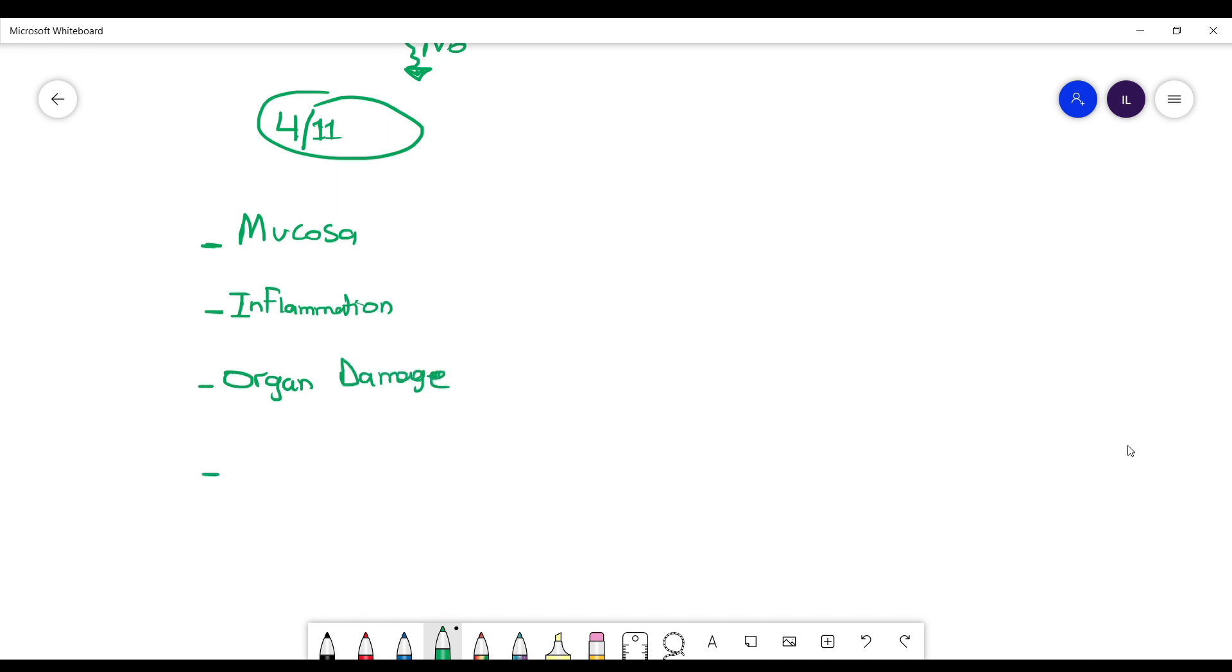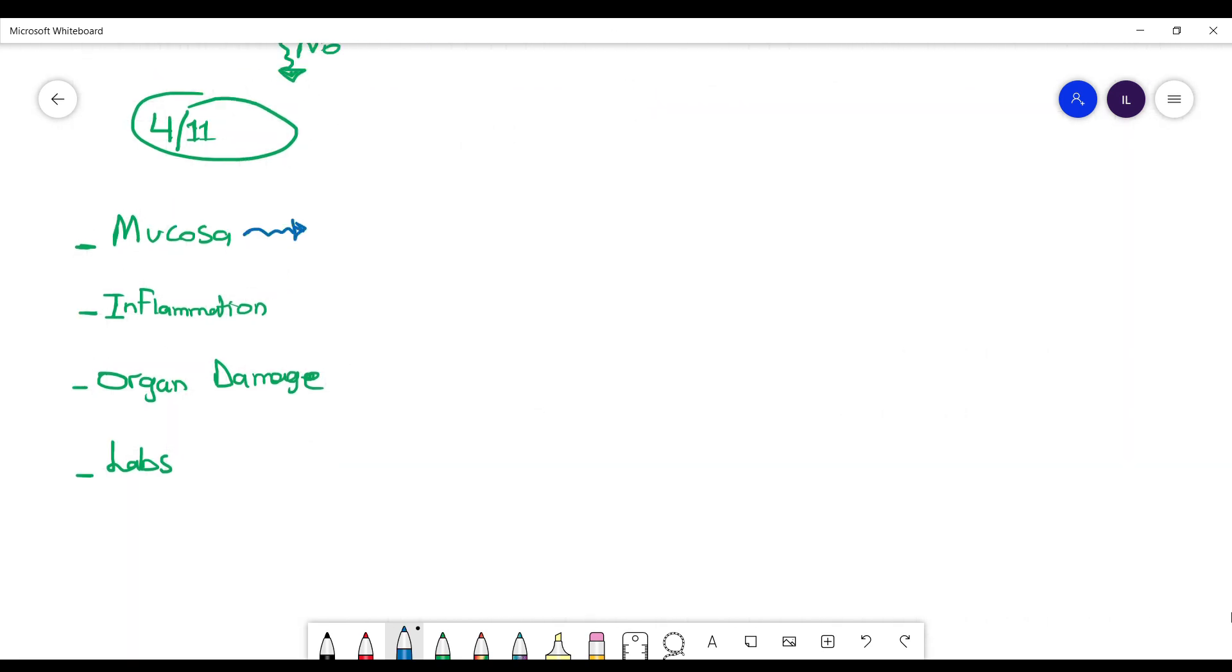After that we have the end organ damage and the last one is lab abnormalities. In mucosa and skin manifestations we are talking about the presence of malar rash, oral ulcers the painless ones, and discoid rash in addition to photosensitivities.